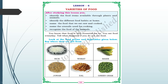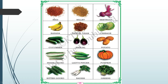Look at the food grains and vegetables given below and say where they are got from. You can see here firstly rice, wheat, maize, jowar, dal, green gram, ragi, millet.